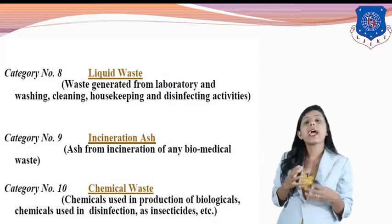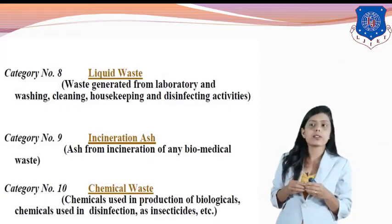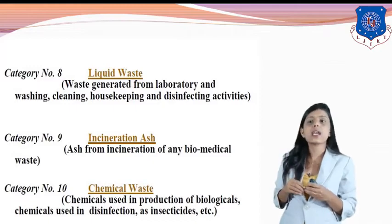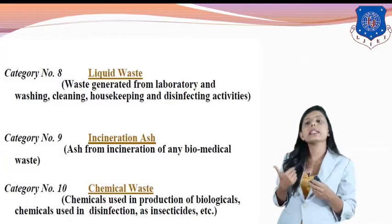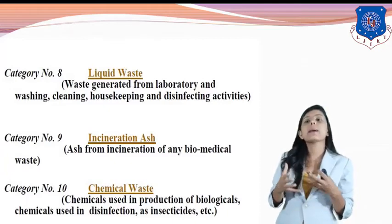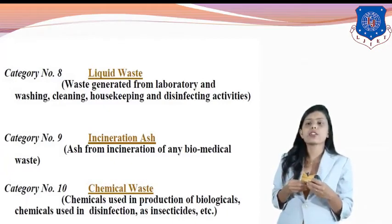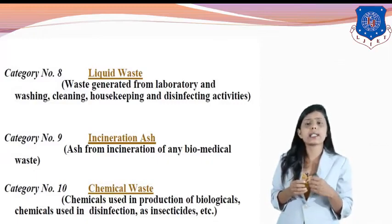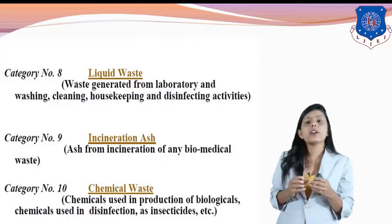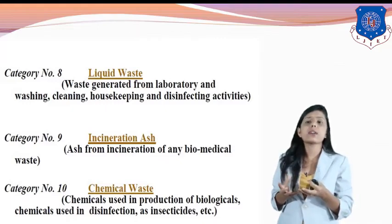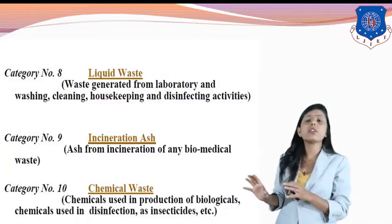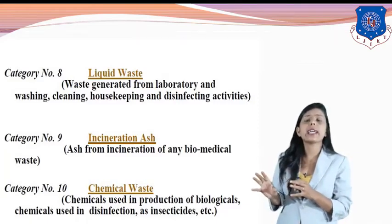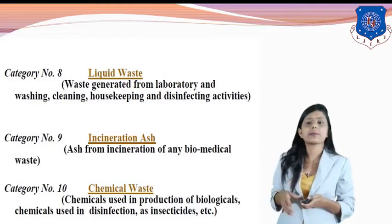Category nine is incineration ash — after waste is burned, the ash created from that waste is known as incineration waste and comes under category nine. Category ten is chemical waste — chemicals used in production of biologicals, chemicals used in disinfection, as insecticides, for research activities, and chemicals used to wash and disinfect clothes all come under category ten type of waste.